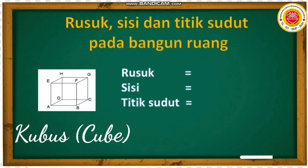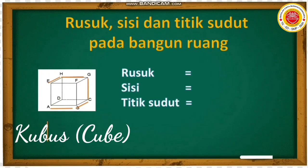Mana ya yang dinamakan rusuk? Ingat ya, pertemuan antara sisi yang membentuk garis. Jadi garis-garis ini disebut rusuk. Sekarang kita hitung ya, rusuk kubus ini ada berapa ya? Satu, dua, tiga, empat, lima, enam, tujuh, delapan, sembilan, sepuluh, sebelas, dua belas. Jadi jumlah rusuk dari bangun ruang kubus itu ada dua belas rusuk.